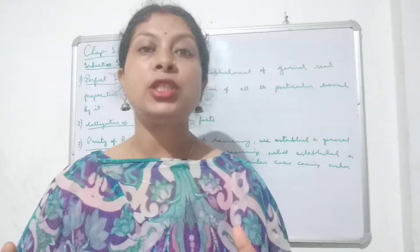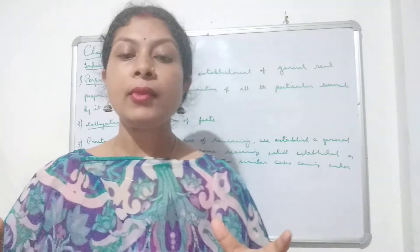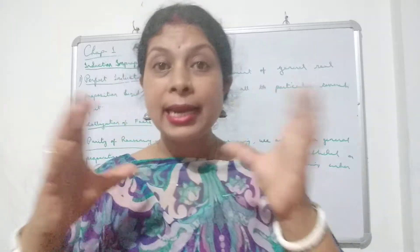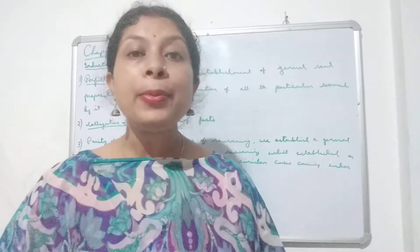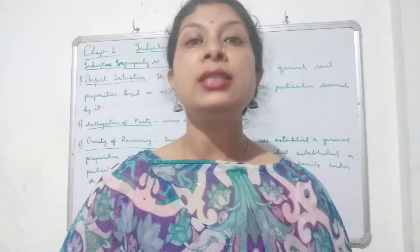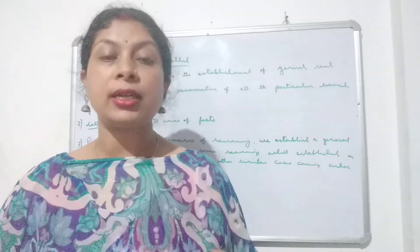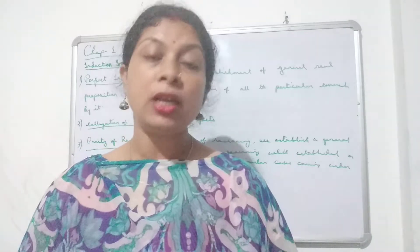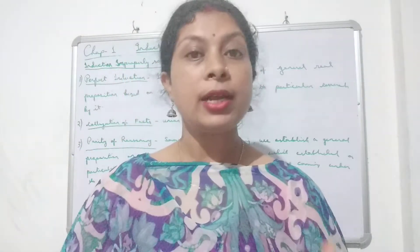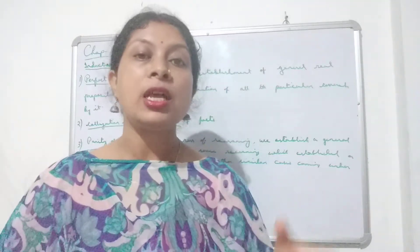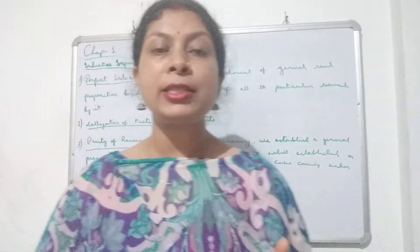So, colligation of facts means union of facts. Union of facts ka matlab hai: to know about any thing in this world, we first need to know all its qualities. When we bring all the qualities together, only then we can know what that thing is and what its name is. Otherwise, if we know only one or two facts about something, we can never describe it or know its name. This is the second subdivision of induction proper.